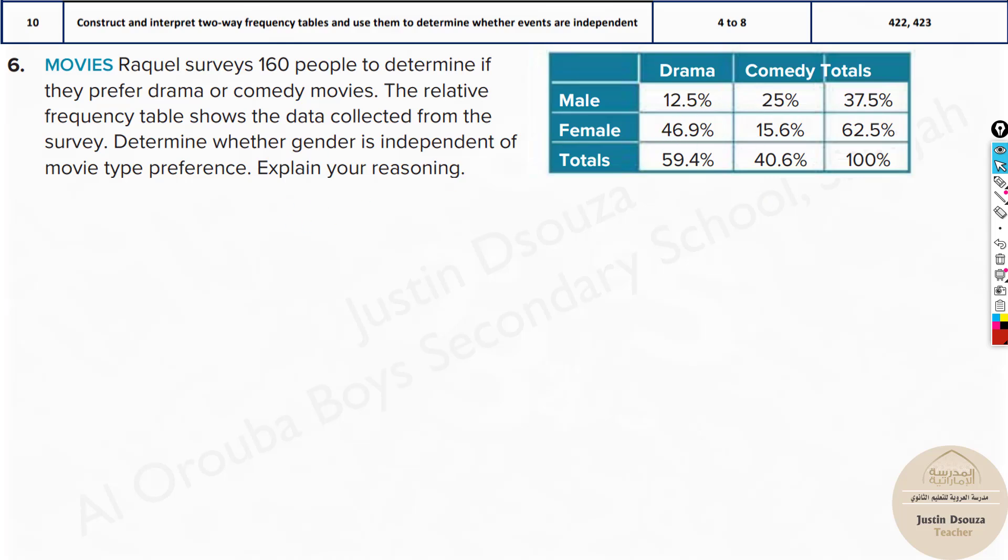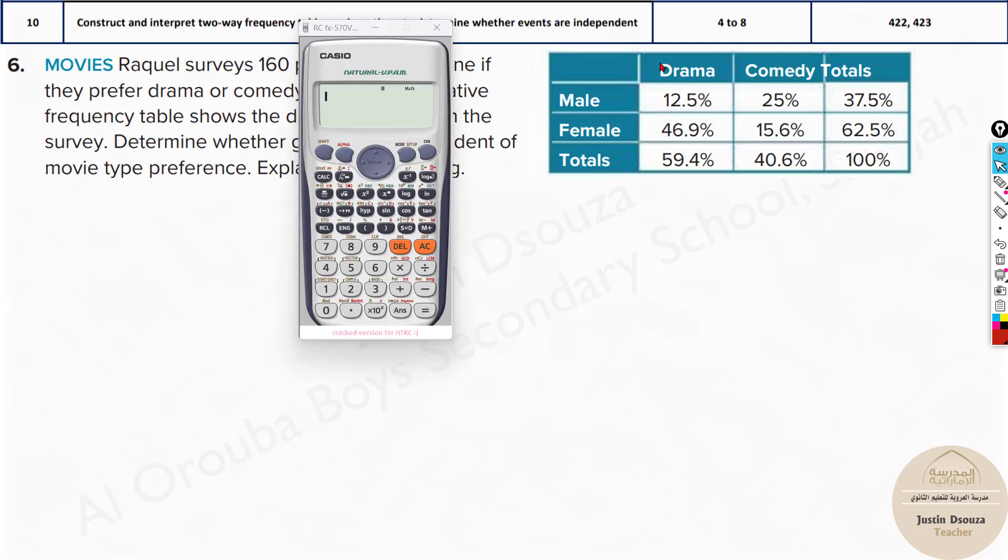You can find whether the data is independent or not independent by finding the joint frequencies, that's the inner part. Now if you multiply the marginals, the totals, and get this value, that is the expected joint frequency. Then that would mean it is basically independent. But if they don't match, if you find the expected and actual are different, then it's not independent.